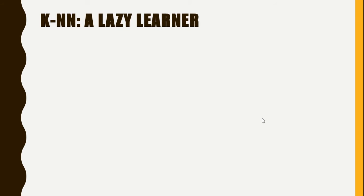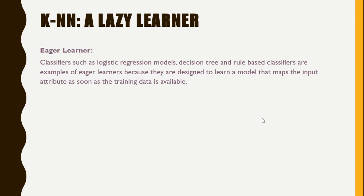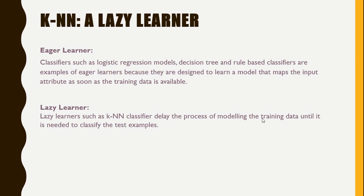The K nearest neighbor classifier is also known as a lazy learner. There are mainly two types of learners: eager learners and lazy learners. Classifiers such as logistic regression, decision trees, and rule-based classifiers are examples of eager learners, because they learn a model that maps the input attributes as soon as training data is available. Whereas the lazy learner such as KNN delays the process of modeling the training data until it is needed to classify the test example — it does not build a generalized model, but waits until it needs to classify new test data.